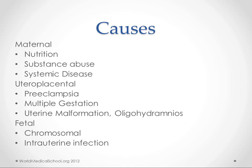Preeclampsia contributes to IUGR, as does multiple gestation — you can imagine there is less nutrition to go around. Uterine malformation is another cause, as well as oligohydramnios, which restricts the area the child has to grow. The fetus can also have problems of its own, like chromosomal abnormalities and infections from the mother.